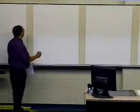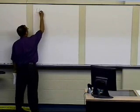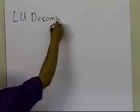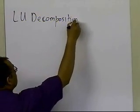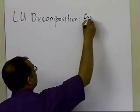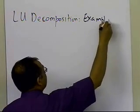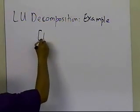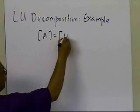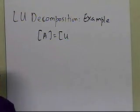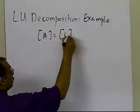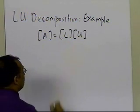In this segment, we're going to take an example of how you do LU decomposition of a square matrix. This is not an example of the LU decomposition method itself, but how do you decompose A equals L times U, because that's what you need — in order to do the LU decomposition method, you first need to decompose your A into L times U.